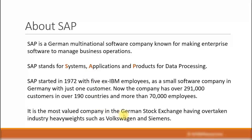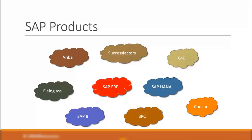It is the most valued company in the German stock exchange, having overtaken industry heavyweights such as Volkswagen and Siemens, which are over 100-year-old companies. This shows the organic and steady growth of SAP to become the number one business software in the world. SAP has launched many successful products over the last four decades. Their main flagship product has been the SAP ERP suite, and throughout this course we will concentrate on the financial processes in the SAP ERP environment.